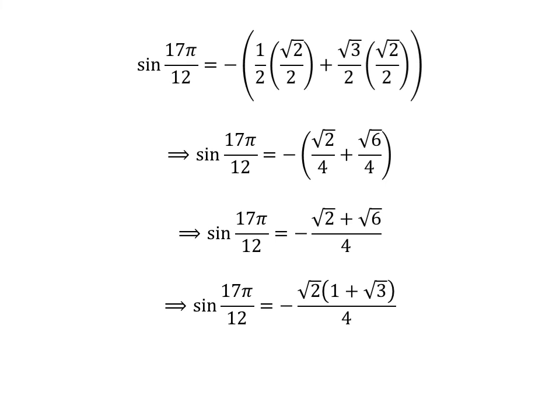Taking out the common factor square root of 2 in the numerator gives us sine of 17 times pi upon 12 is equal to minus of square root of 2 times the quantity 1 plus square root of 3, upon 4.